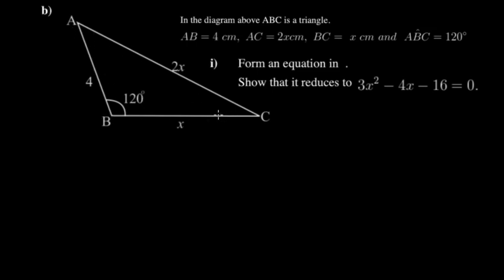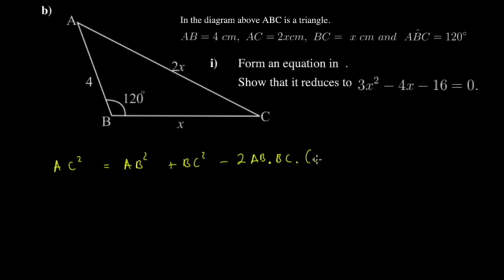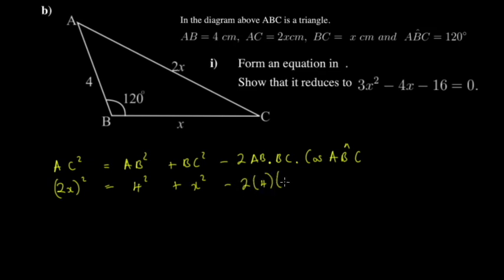For the cosine rule, write it in the required notation. AC squared equals AB squared plus BC squared minus 2·AB·BC·cos(angle ABC). So AC squared is (2x) squared, AB squared is 4 squared, BC squared is x squared, minus 2 times 4 times x times cos(120 degrees).